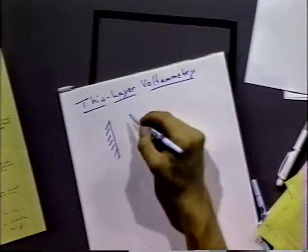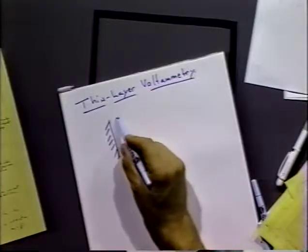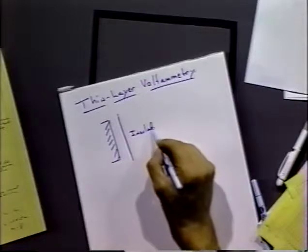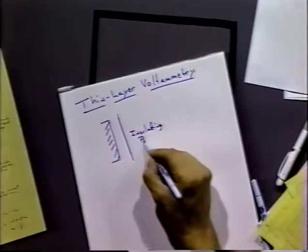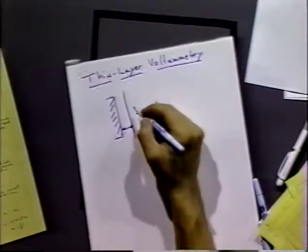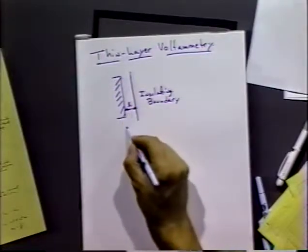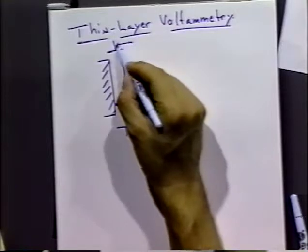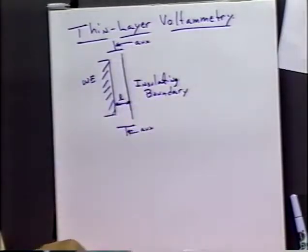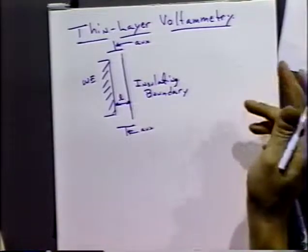Let's suppose we have a thin layer cell. We can have a normal electrode, and rather than having it exposed to a bulk of solution, we can put next to that thin electrode some sort of insulating boundary — another glass wall or plastic or something like that. The difference between the parallel electrode and the boundary would be called L. We could use auxiliary electrodes on either side to supply the potential or current needed to do the reaction. Now, rather than having a freely diffusing system with semi-infinite boundary conditions, our boundary conditions are now fixed by the insulating boundary itself.